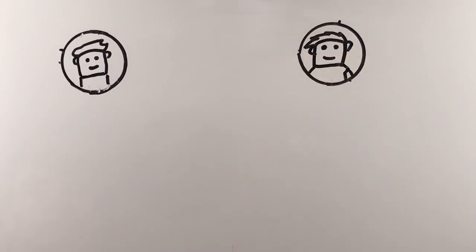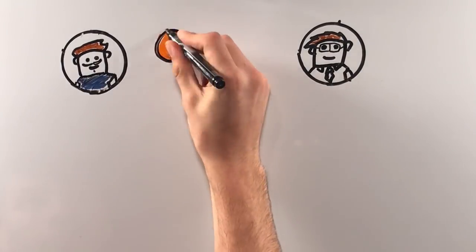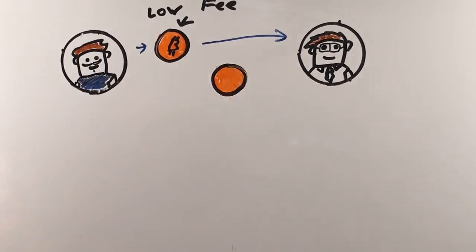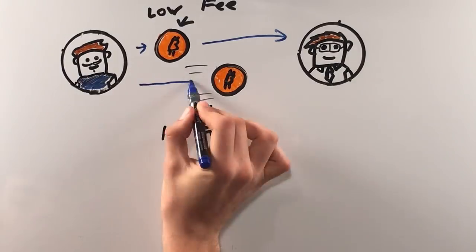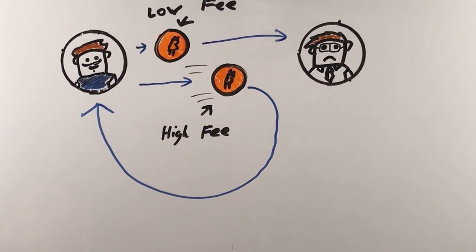Unfortunately, this broke zero-conf. With Replace by Fee, when you make a purchase with Bitcoin, you can walk out the store and rebroadcast your transaction with a higher fee, rerouting it to your own address.